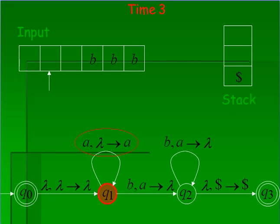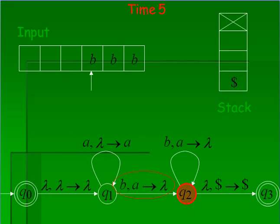It is being at the same state q1. Then again the same transition will be followed. Then again it will remain the same. Now here you see, b is the input symbol, a is the pop symbol, and lambda is the push symbol.